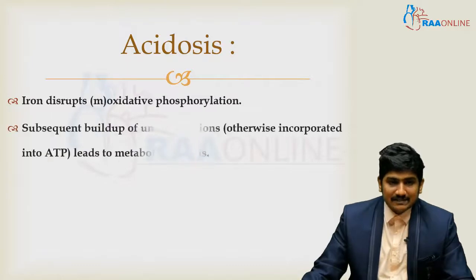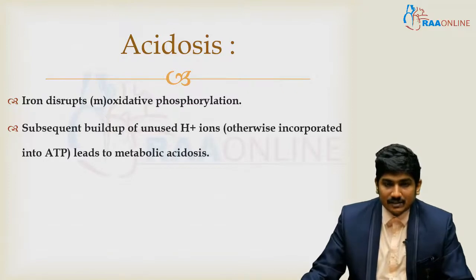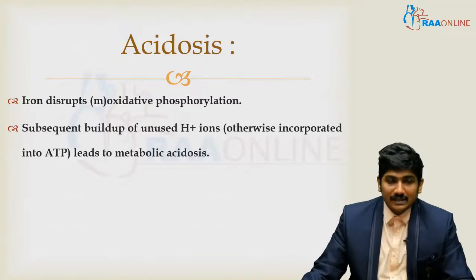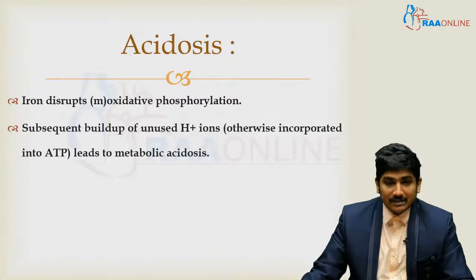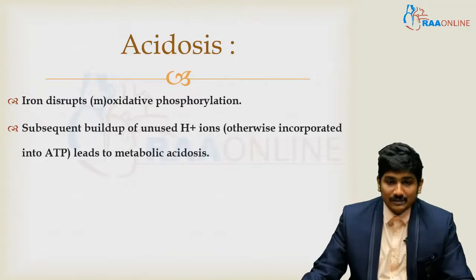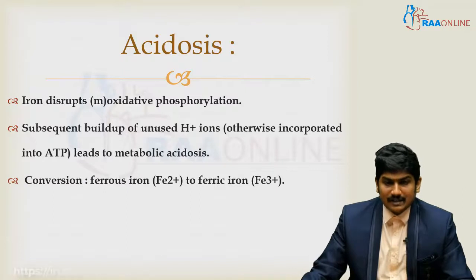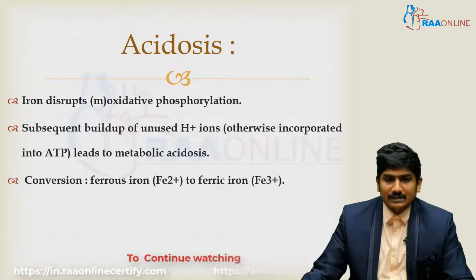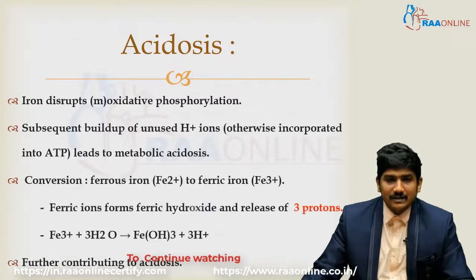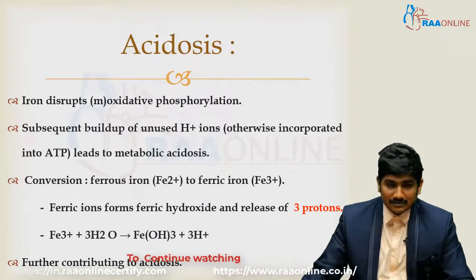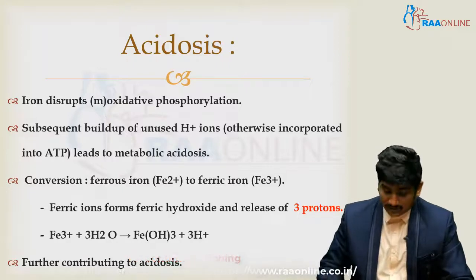Iron disrupts mitochondrial oxidative phosphorylation, causing a buildup of unused hydrogen ions that are not incorporated into ATP molecules, leading to metabolic acidosis. Additionally, the ferrous ion consumed is converted into ferric ion, which forms ferric hydroxide and releases three protons, further contributing to acidosis.